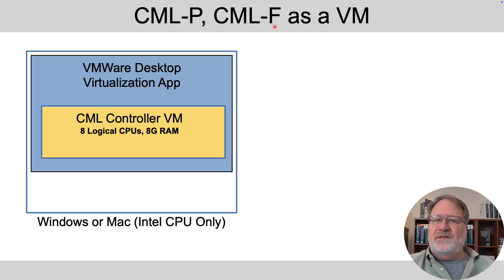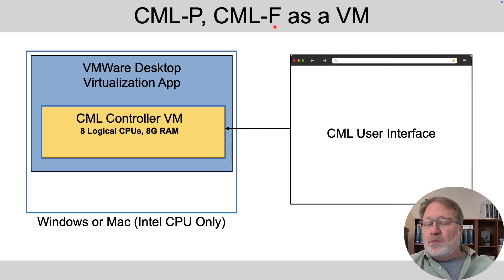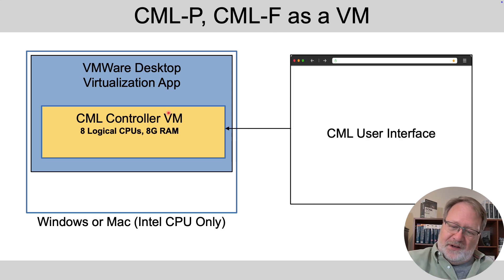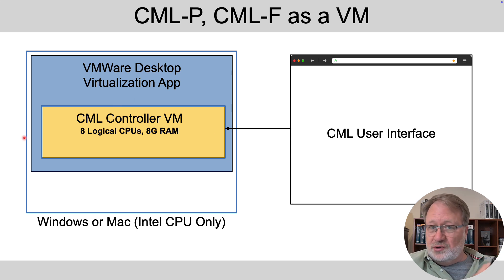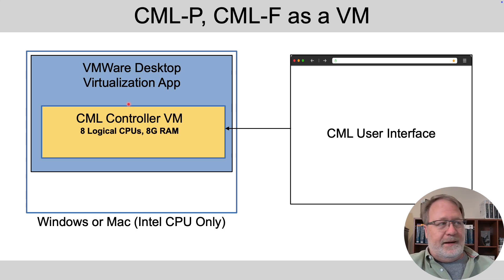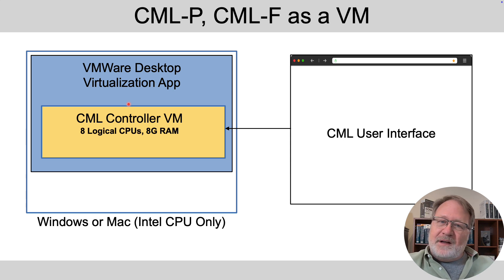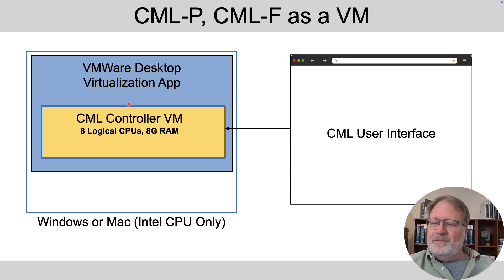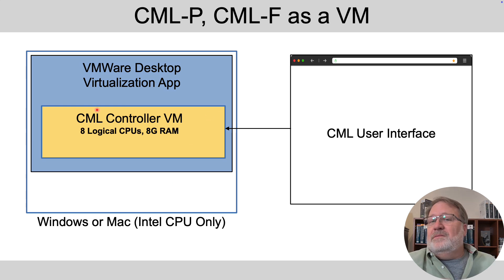You install it and start the VM. Once it's up and running, you'll see the console of the VM — it'll tell you what IP address the CML controller is using. You open a web browser, browse to that IP address, and connect to the graphical interface of the CML controller. Then you can place routers and switches in a design, cable them together, start the lab nodes, and access the consoles of the devices.